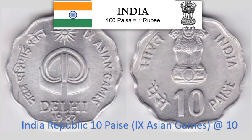India Republic 10 Paise — F.A.O. World Food Day. 2.3 gram Aluminium scalloped coin with 12 notches, 26 mm diameter. Krause Reference No. 37. Approximate market value Rs. 10.